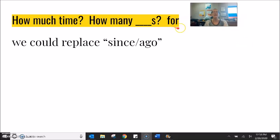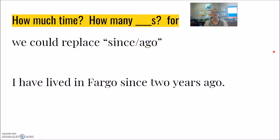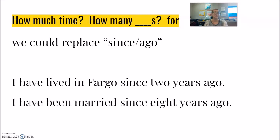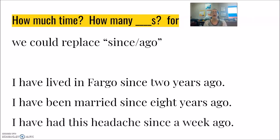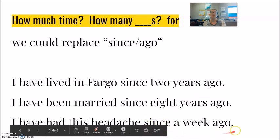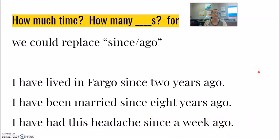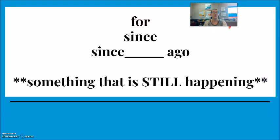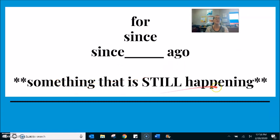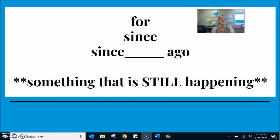However, we can take away the word for and use the pair since ago together. 'I have lived in Fargo for 2 years' becomes 'I have lived in Fargo since 2 years ago.' 'I have been married for 8 years' becomes 'I have been married since 8 years ago.' 'I have had this headache for 1 week' becomes 'I have had this headache since 1 week ago.' Again, for, since, and since ago are talking about something that is still happening, still continuing.